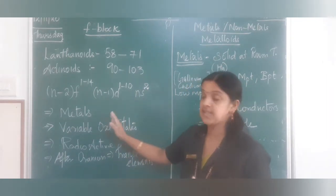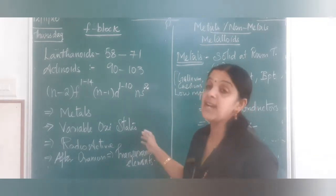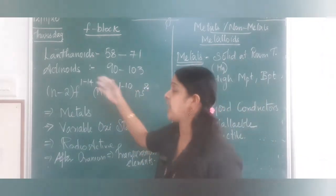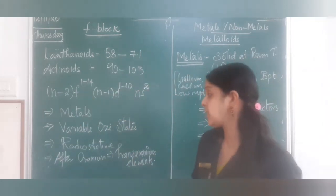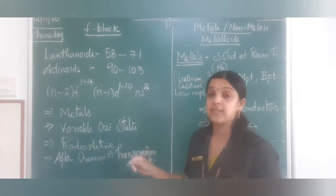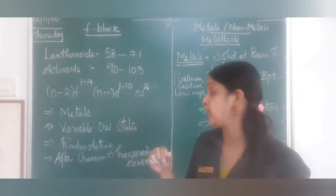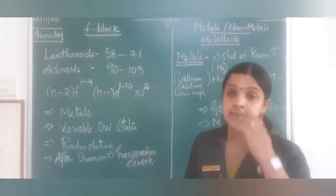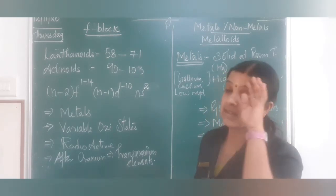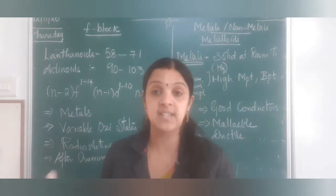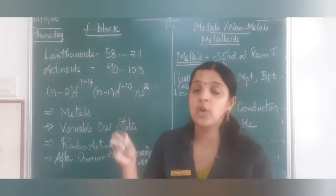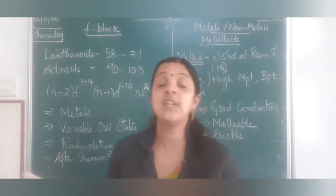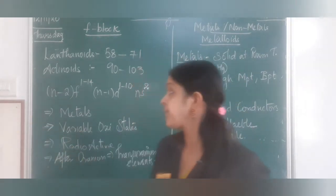F block elements behave as metals and have different oxidation states due to the participation of all D and F subshell electrons. Actinoids are especially radioactive. Elements after uranium are called transuranium elements. The chemistry of actinoid elements has not been fully researched, but they have wide applications in nuclear reactors and nuclear chemistry.